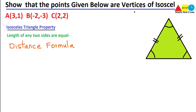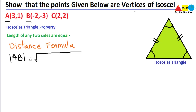We have to find the distance between points A and B first. So AB equals the square root of: take the x-coordinates of A and B and subtract them — that is (−2 − 3) whole squared — plus the y-coordinates of A and B subtracted using y₂ minus y₁, so (−3 − 1) whole squared.